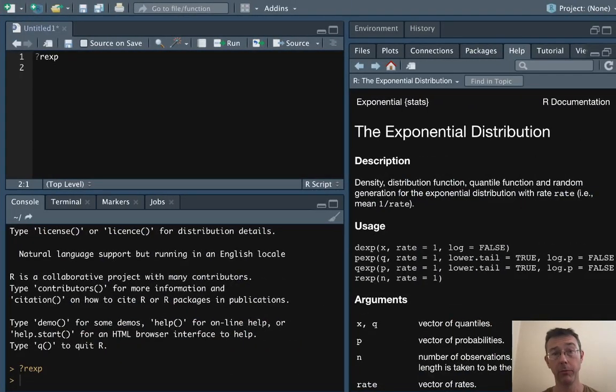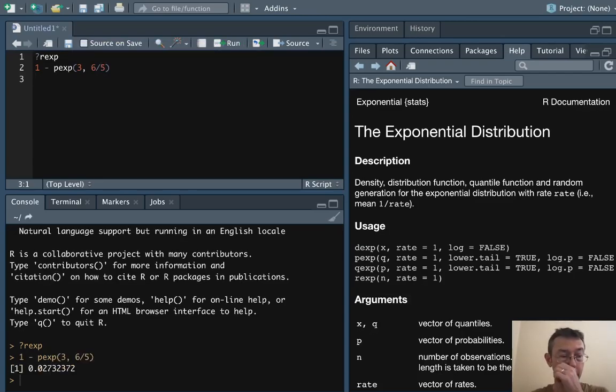I've already pulled up the help file for the exponential distribution with question mark rexp. And you see that tells you about those four basic functions that we just talked about. So we want to find the probability that the waiting time is at least 3 minutes. In this case, we want to do 1 minus the probability that it is less than or equal to 3 minutes. So 1 - pexp(3, 6/5). Here we get about 2.7%.